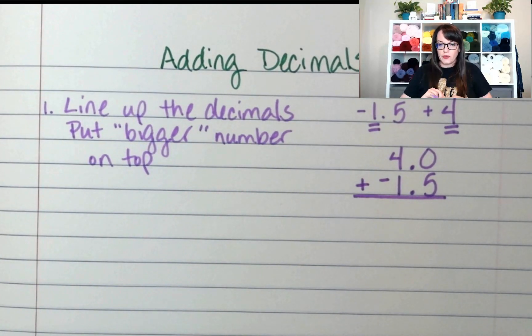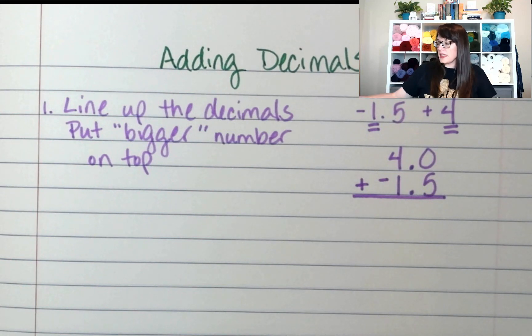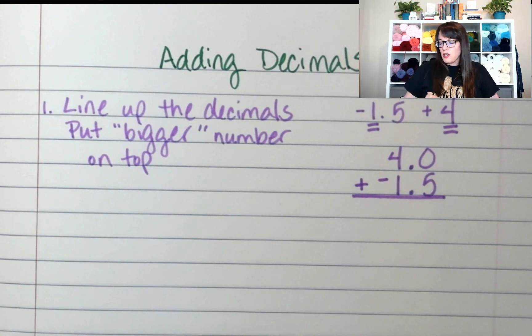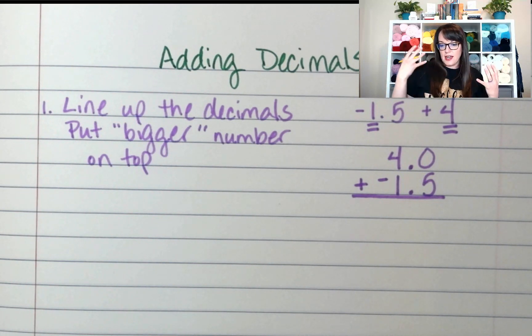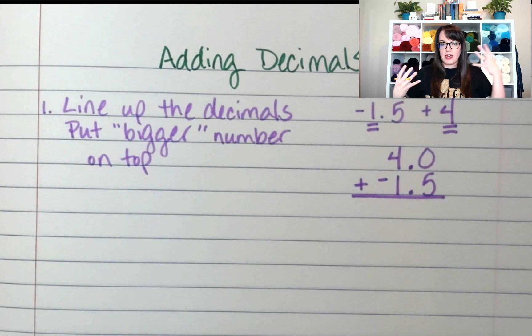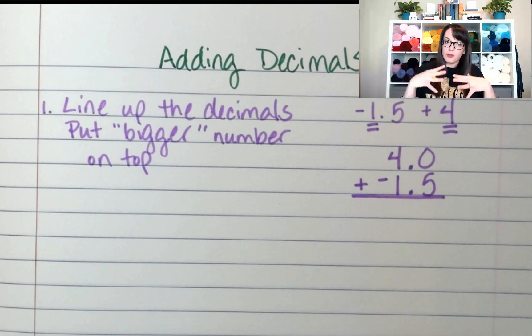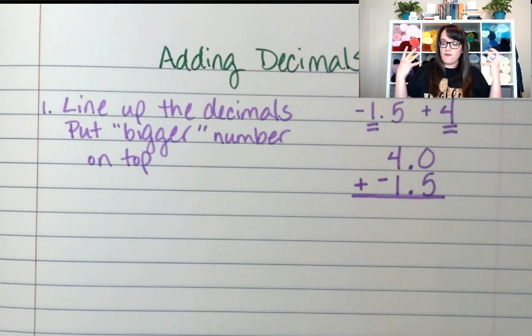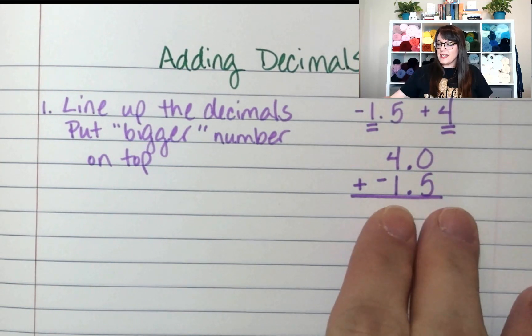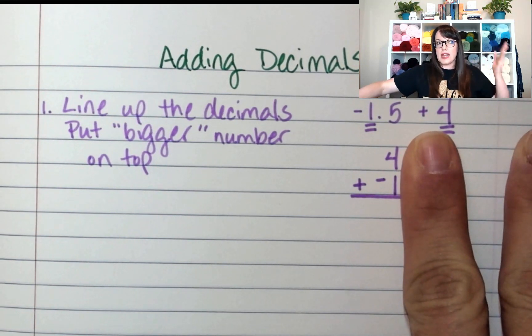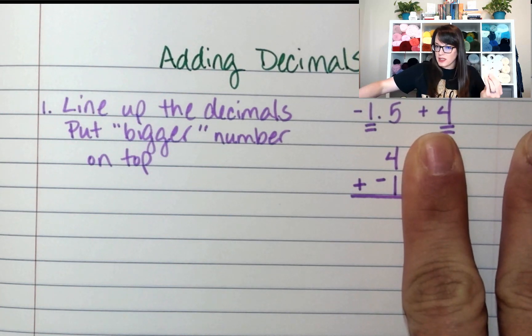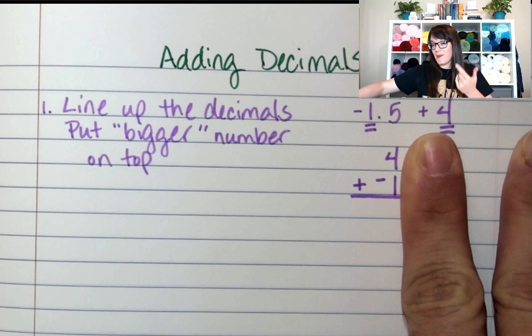Now here's where I have to remember my integer rules. Remember in sixth grade when you worked with integers, if the signs were the same and you added them together, so if you had negative 2 plus negative 3, you had five negatives. But in this instance, they're not the same. So if I had a positive 4 plus a negative 1, would I add those together or would I subtract them? Since they're different signs, I'm going to subtract them.